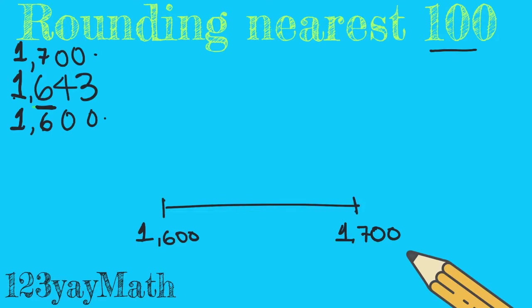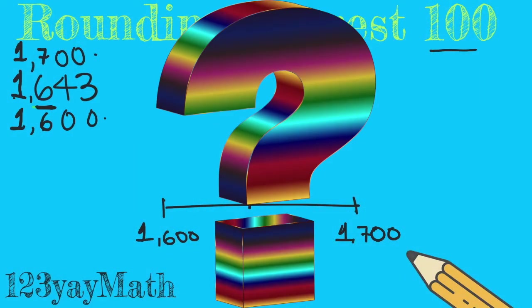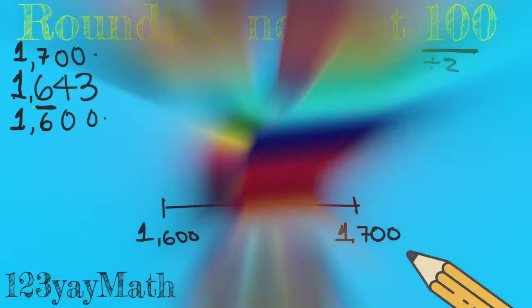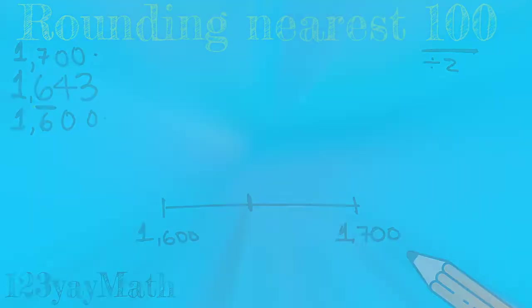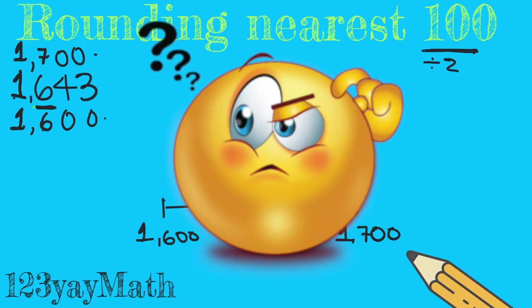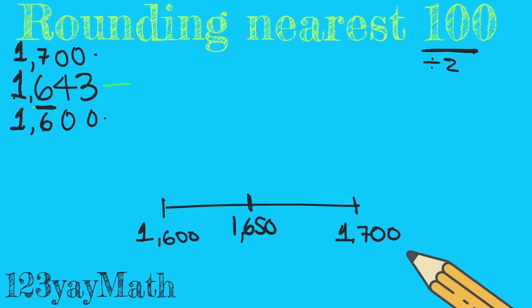How do I find my midpoint? Exactly. I'm going to divide this in half and I know that 100 divided by 2 is how much? 50. So 1650 is my midpoint. What do I do next? Very good. I'm gonna place my number on the number line.